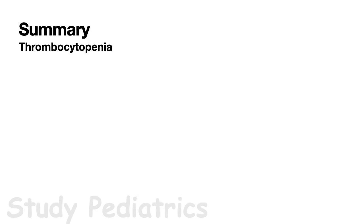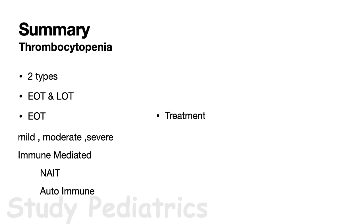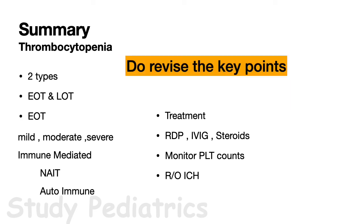In summary, thrombocytopenia is classified as early onset (less than 72 hours) or late onset (more than 72 hours). Early onset can be mild, moderate, severe, or immune-mediated — including NAIT or autoimmune thrombocytopenia. Treatment includes RDP, IVIG, and steroids. Monitor platelet counts and rule out ICH with cranial USG.